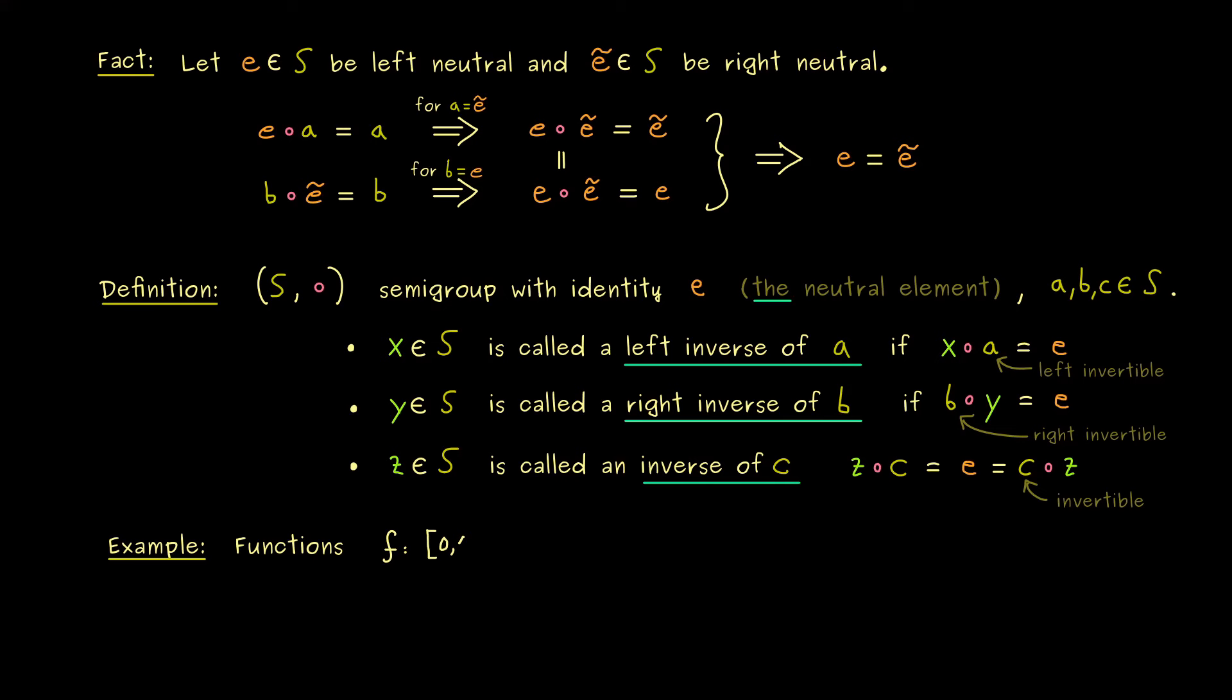So we have all the functions from this interval into the interval again. And if we denote this set with f and the circle denotes the composition of functions then we know that this is a semi-group.